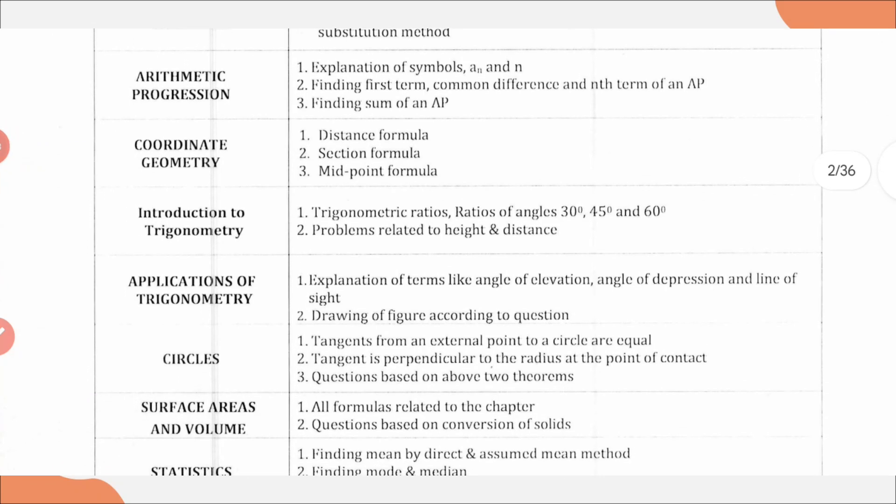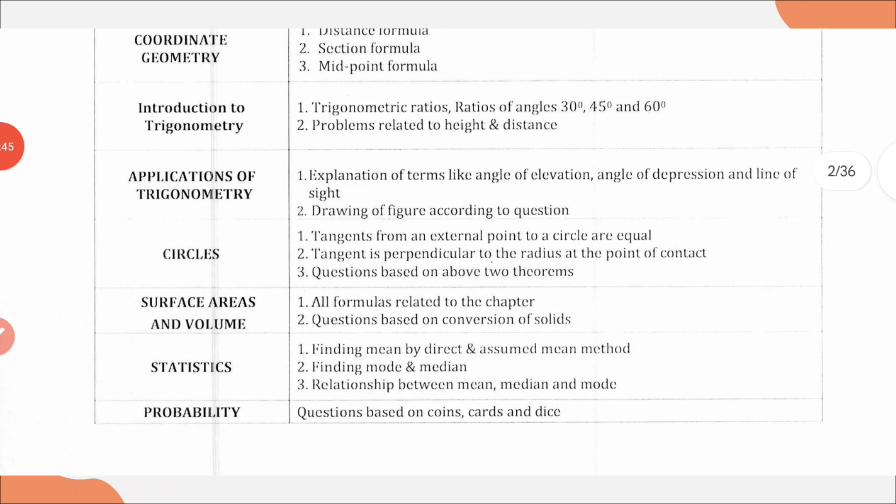From Introduction to Trigonometry: trigonometric ratios of angles 30, 45, and 60 degrees, then problems related to height and distance.